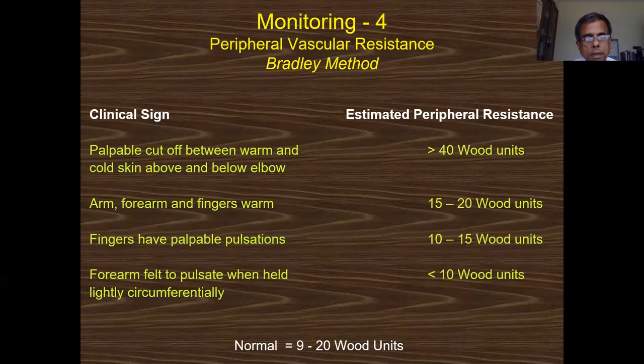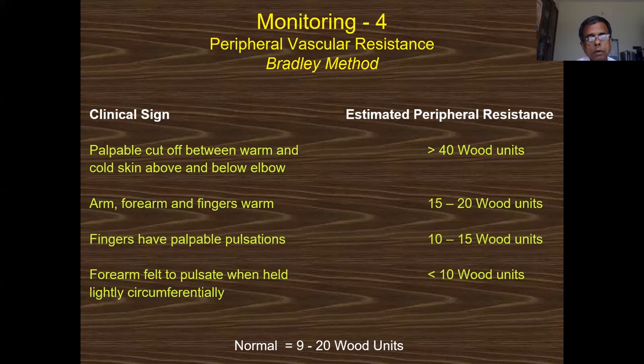An older clinical method (Bradley method) assessed peripheral resistance bedside: a pulsating forearm indicates very low resistance (~10 Wood units); palpable fingers 10–15; normal forearm 9–20; a warm-to-cold cutoff above the elbow indicates very high peripheral resistance.